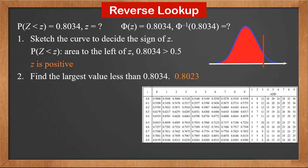Second, find the largest value less than the probability value 0.8034. Looking in the z table, we find that it's 0.8023, because the value to the right is 0.8051, which is greater than 0.8034. Third, go left and up to find z. It is 0.85.